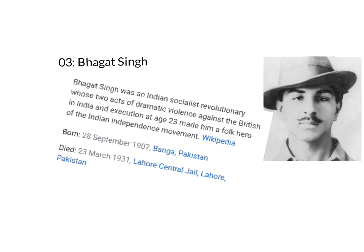Bhagat Singh threw bombs on the British assembly, for which he was hanged by the British government. He was only 23 years of age when he was hanged, on 23rd March 1931 in Lahore Central Jail.